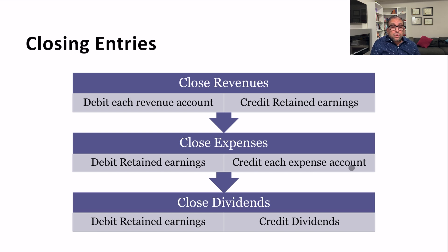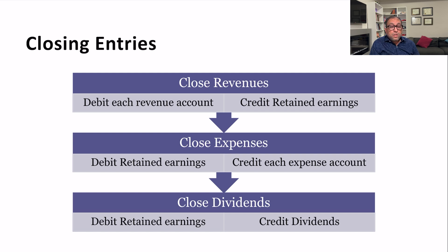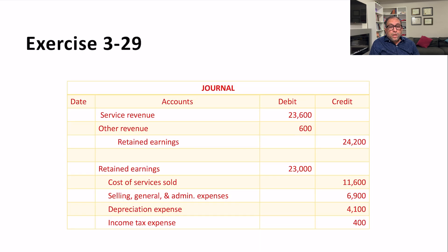The normal balance for dividends is a debit balance, so we credit the dividends account and debit retained earnings. To summarize: for revenues, debit each revenue account and credit retained earnings; for expenses, debit retained earnings and credit each expense account; and for dividends, debit retained earnings and credit dividends.